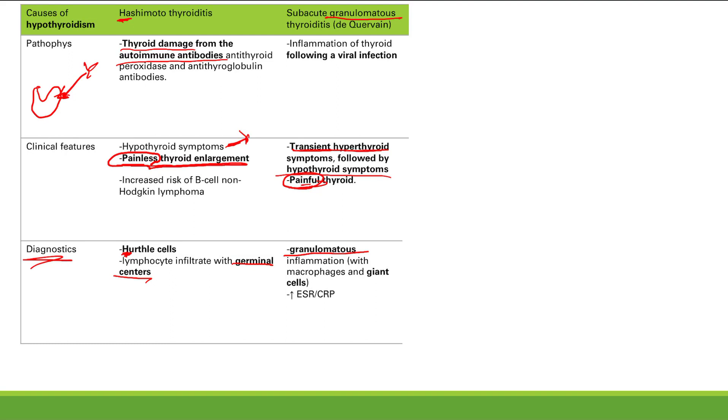This condition follows a viral infection, so you're going to see increased inflammatory markers. The granulomatous histology is easy to remember because it's in the name: subacute granulomatous thyroiditis.